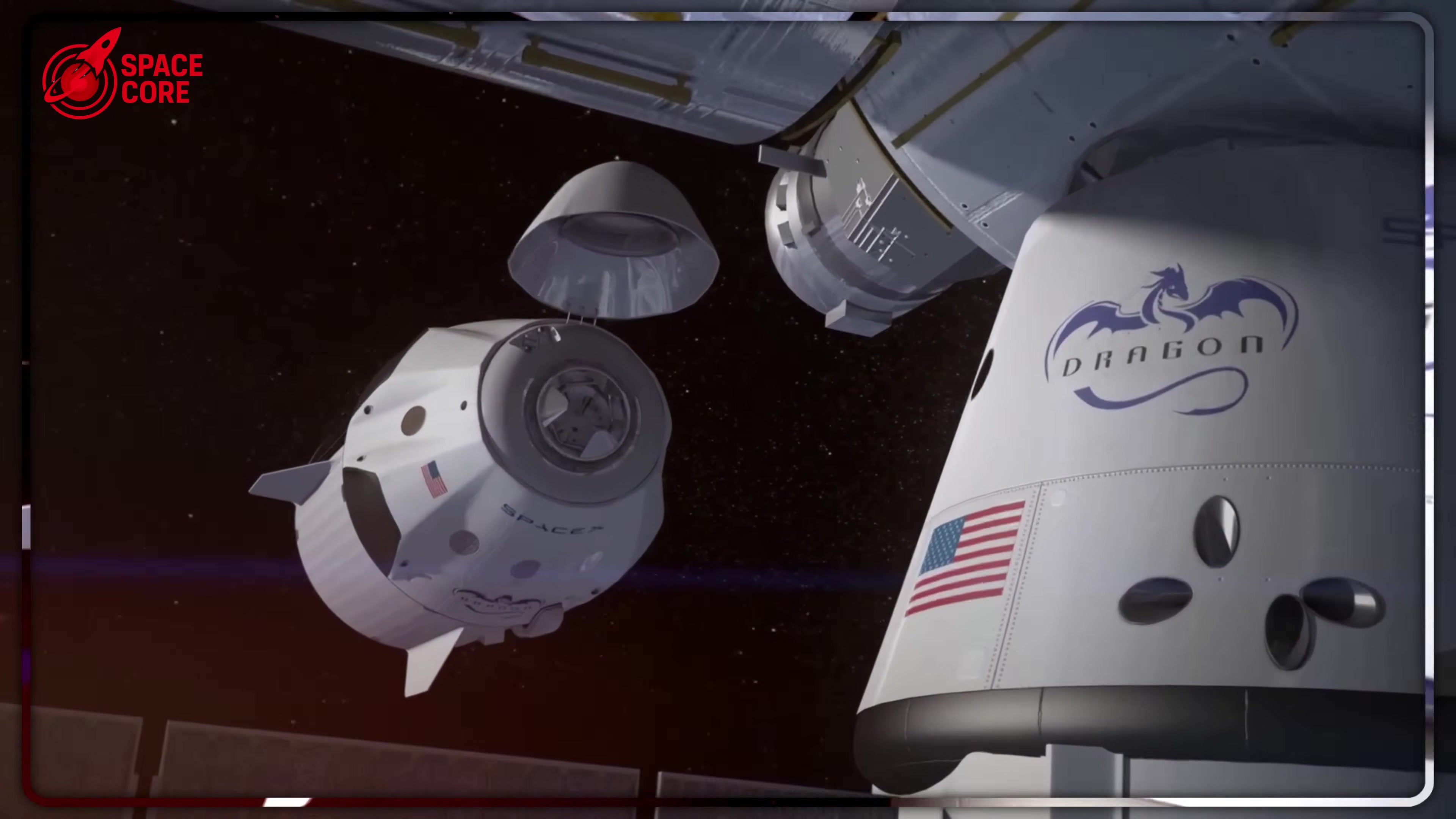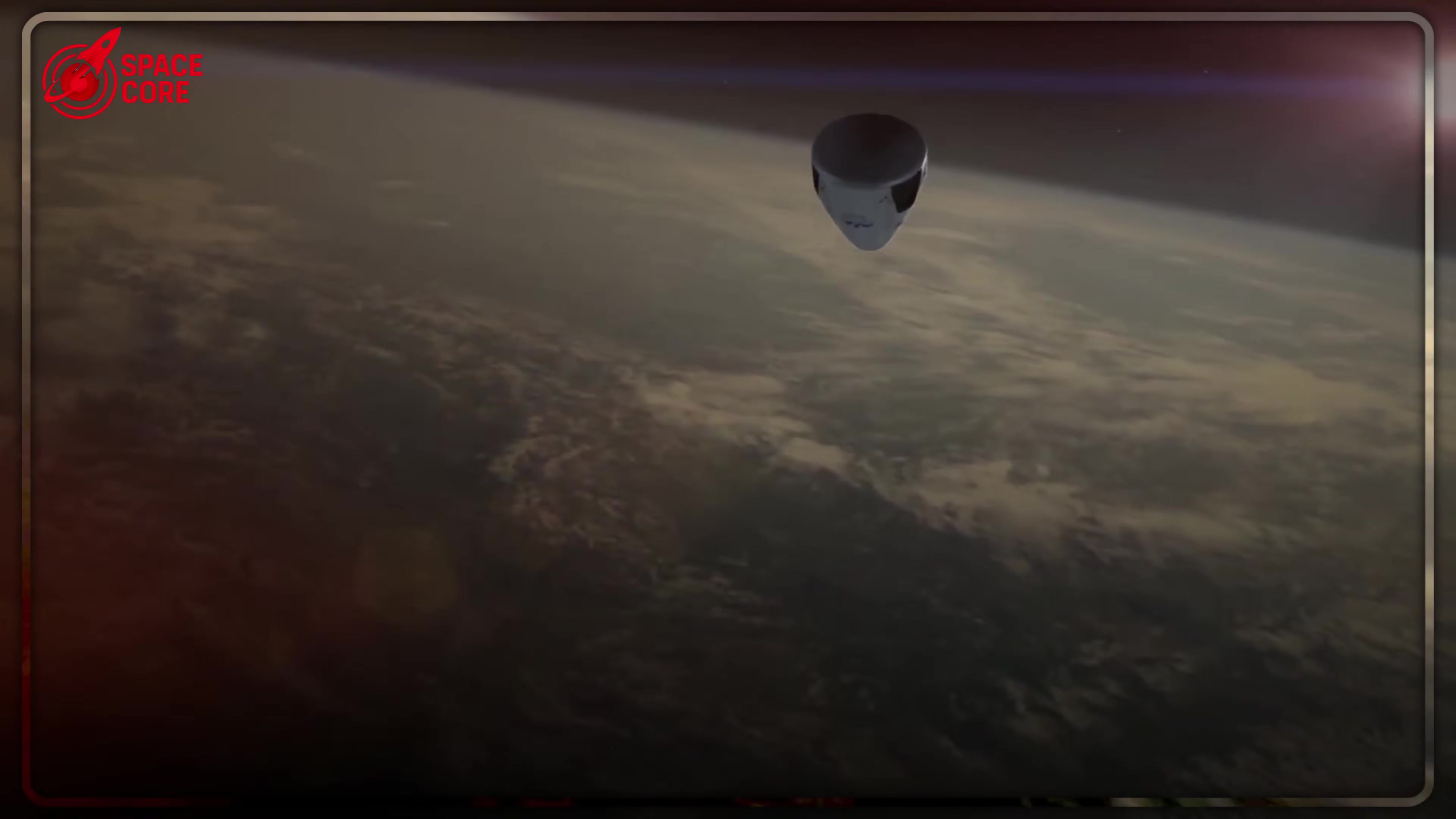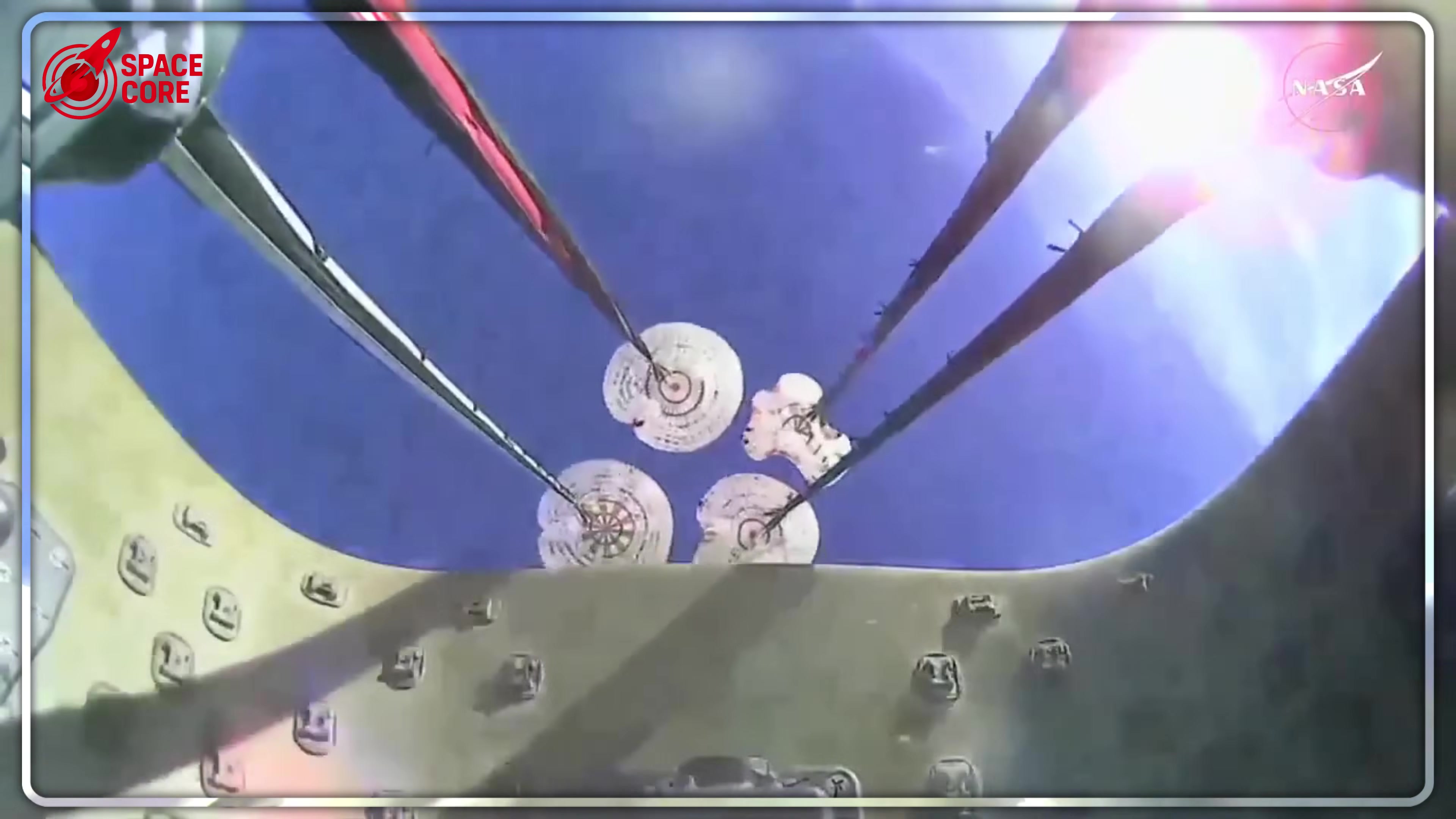But here's what makes this absolutely insane. Starship uses the exact same propulsive landing technology that NASA banned for Dragon. Remember those Super Draco engines that exploded in 2019? Starship's Raptor 3 engines make them look like firecrackers. Each Raptor 3 produces 560,000 pounds of thrust, more than double a Super Draco. But here's the kicker. They're actually simpler and more reliable than the engines that failed on Dragon. How is that possible? SpaceX learned from Dragon's failures and completely reimagined rocket engine design. The original Raptor looked like a flying spaghetti monster, Musk's actual words, with cables and pipes everywhere. Raptor 3 looks like alien technology. Sleek,